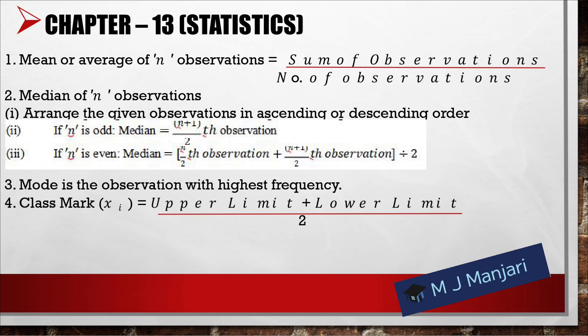Next we have Chapter number 13: Statistics. Mean (or average) of n observations = sum of observations ÷ number of observations. For the median of n observations: first, arrange the data in ascending or descending order. If n is odd, median = ((n+1)/2)th observation. If n is even, median = [(n/2)th observation + (n/2+1)th observation] ÷ 2. Mode is the observation with the highest frequency. Class mark = (upper limit + lower limit) ÷ 2.